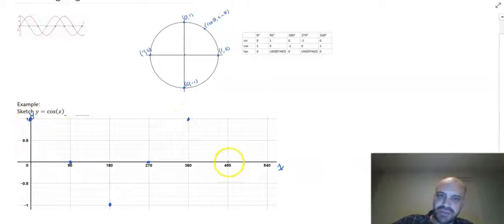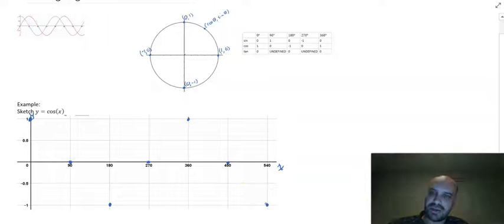Now, 450. 450 is not on my table. But these periodic functions, they're called periodic because they repeat. So, up to the top, down to the bottom, down to the middle, down to the bottom, back up to the middle, back up to the top. And we're starting again. Down again to the middle, down again to the bottom. And now you want to get that nice curve going on.